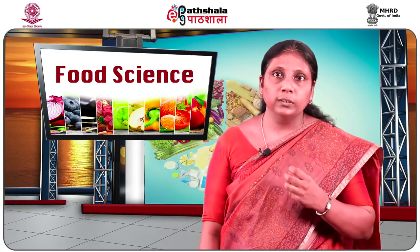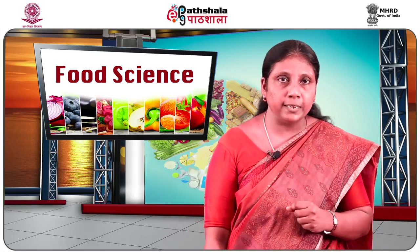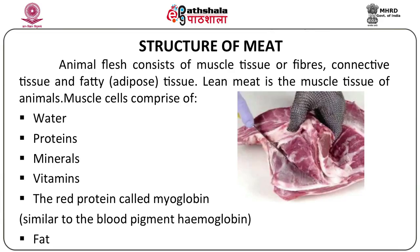Let us now look into the structure of meat. Animal flesh consists of muscle tissue or fibers, connective tissue and fatty tissue, which is otherwise called adipose tissue. So the animal flesh is composed of three major components: muscle tissue or muscle fibers, connective tissue and fatty tissue.